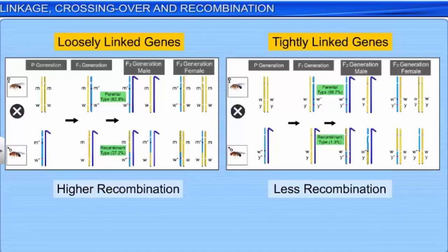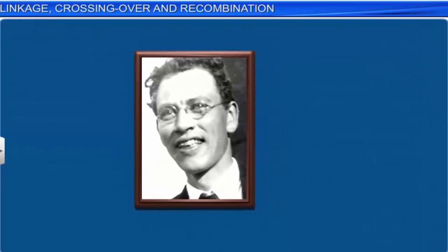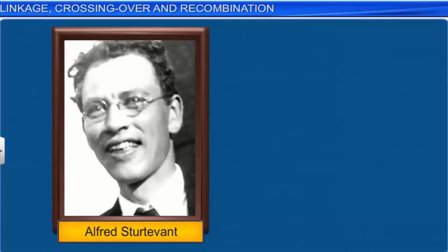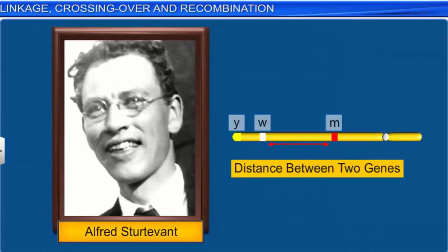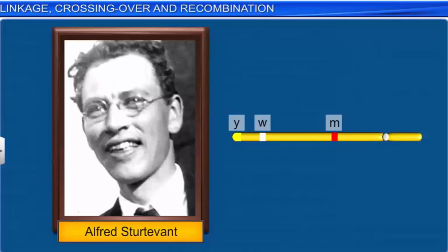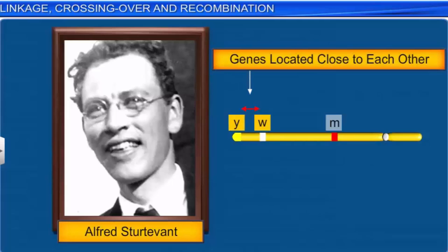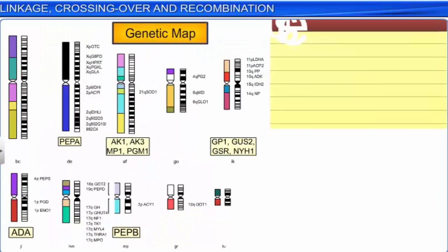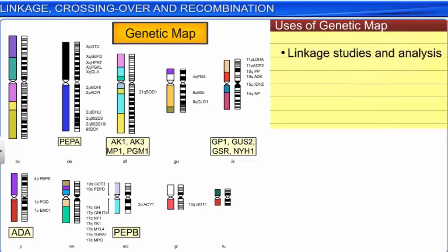This linkage and the frequency of recombination of genes on the same chromosome were used by Morgan's student Alfred Sturtevant as a measure of the distance between genes to map their position on the chromosome. In the experiment we just saw, it is only through mapping that we learned that genes small y and small w were located close to each other, and genes small y and small m were farther apart. Today, genetic maps are being extensively used for linkage studies and analysis, and are a key tool for genome sequencing, or discovering the location and identity of genes.